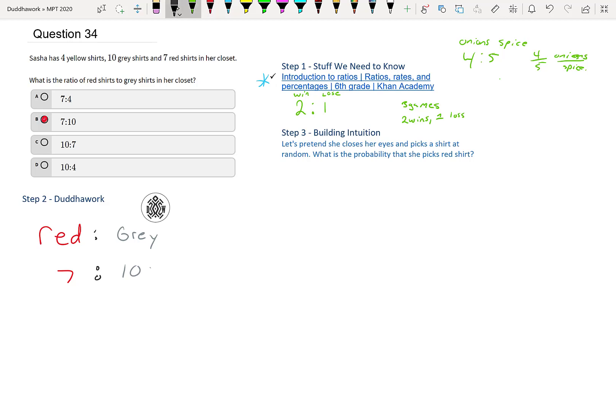If you want to interpret this further, you could do seven over 10 red per gray shirts. So if you analyze this further, that's for every gray shirt that you have, you have 0.7 red shirts. So that means that you have less red shirts than gray shirts. And that makes sense. You have seven and 10.